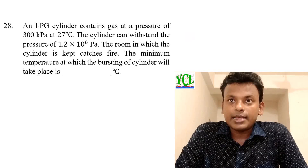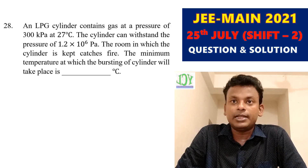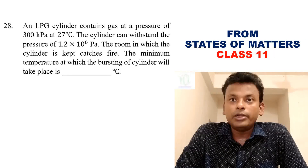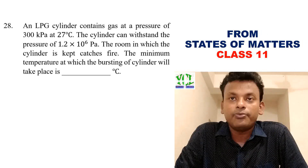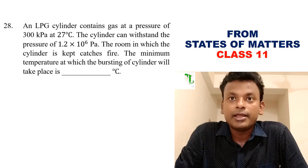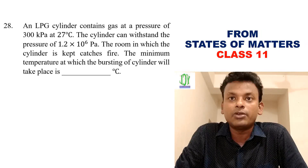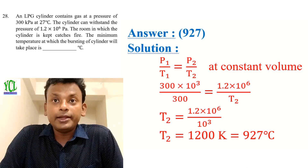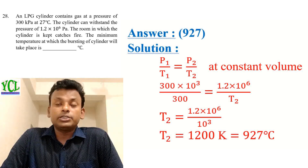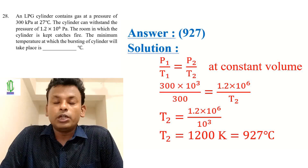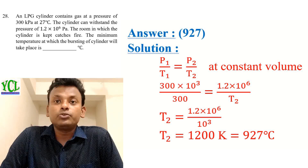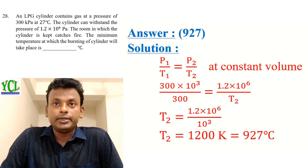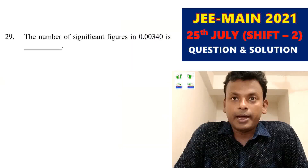Question 28: An LPG cylinder contains gas at 300 kPa at 27°C. The cylinder can withstand a pressure of 1.2 × 10⁶ Pa. The room catches fire; find the minimum temperature at which the cylinder bursts. At constant volume, P1/T1 = P2/T2. Substituting values gives T2 = 1200 K = 927°C. So the answer is 927°C.